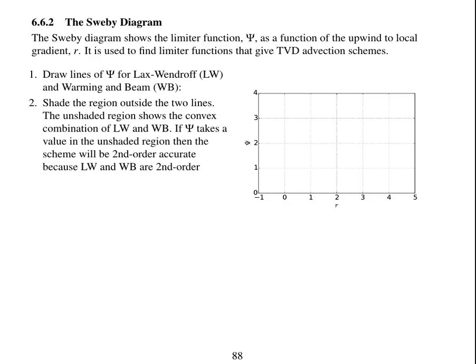Now the next thing to do is shade the region outside the two lines. The unshaded region shows you where you've got a convex combination of Lax-Wendroff and Warming and Beam.